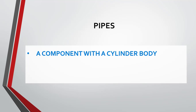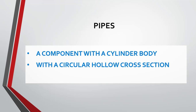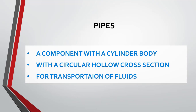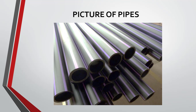Pipes are a component with a cylindrical body and a circular hollow cross section. This hollow cross section is used for the transportation of fluid passing through the pipes. Many of us have seen pipes in reality, but every item used in design and engineering has some technical background. So based on technical evaluations, things may vary. In this video, we will try to understand the technicalities of pipes.